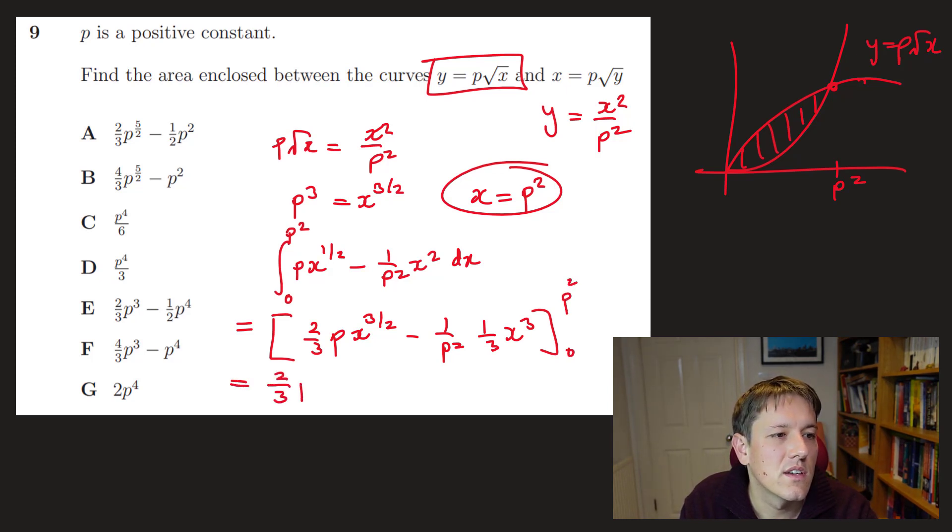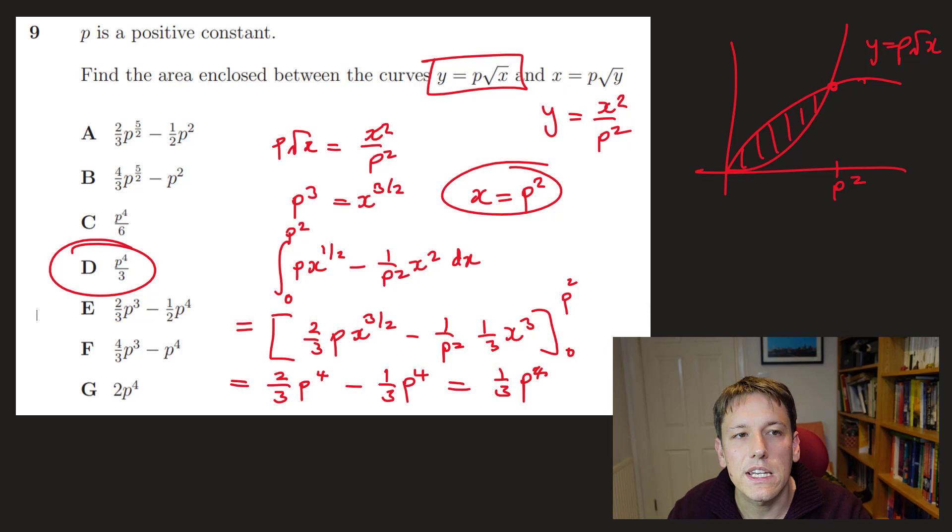So plugging this in, I've got 2 thirds p times now x, p squared to the 3 over 2 is just p cubed. So this is p to the 4. And then 1 over p squared times 1 third times p squared cubed. So p squared cubed is p to the 6 divided by p squared is p to the 4. So minus 1 third p to the 4. And I just get an answer of 1 third p to the 4, which is d, p to the 4 over 3.